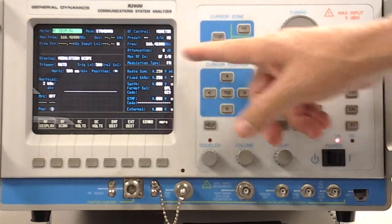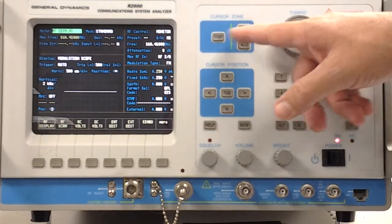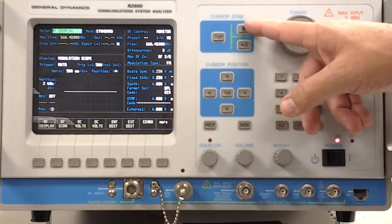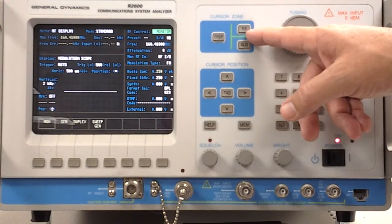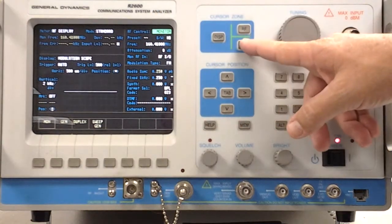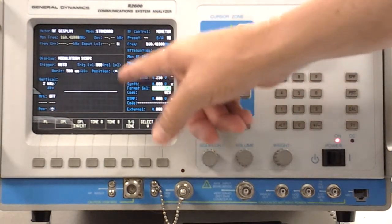We have a display cursor zone, which you can see that we're currently in. Then we also have an RF cursor zone, that would be this portion of the screen, and we have the audio cursor zone.